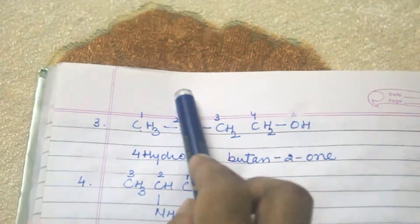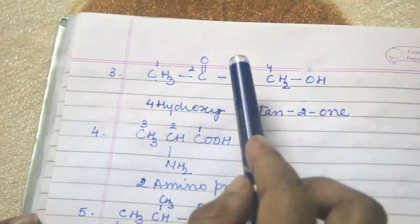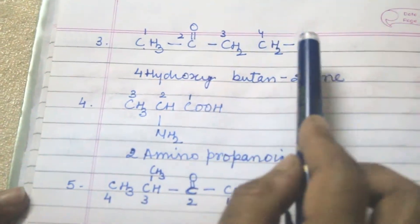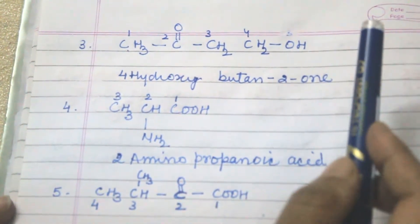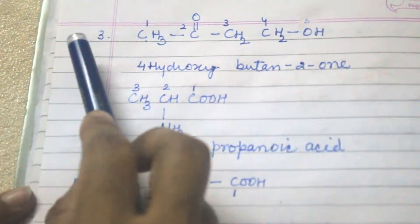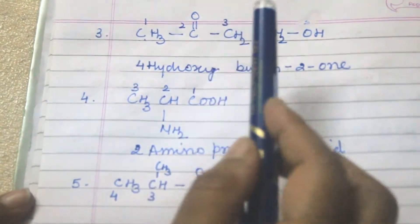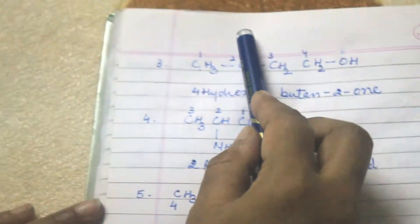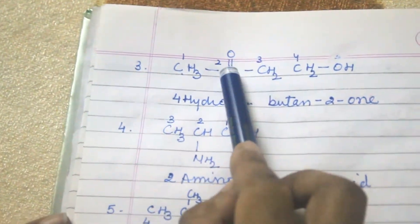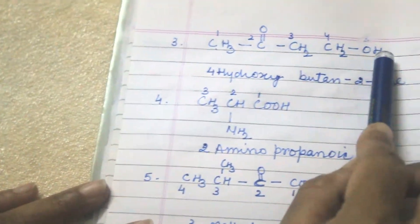Now the third example: ketone has more priority compared to the OH bond, so we do numbering from the ketone end. The ketone is at the second place and the hydroxyl is at the fourth place.